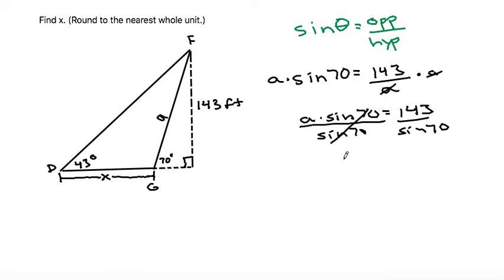So these two sine 70s will cancel and we'll get A is equal to, I'll grab my calculator, make sure it's in degree mode, and it gives me 143 divided by sine 70 is equal to 152.1, let's say 152.2 because I got my calculator 152.17, and that's a unit of feet.